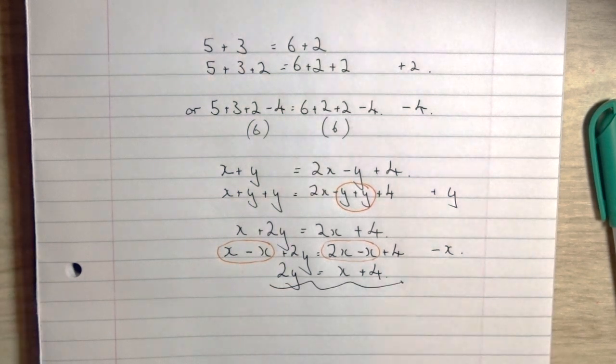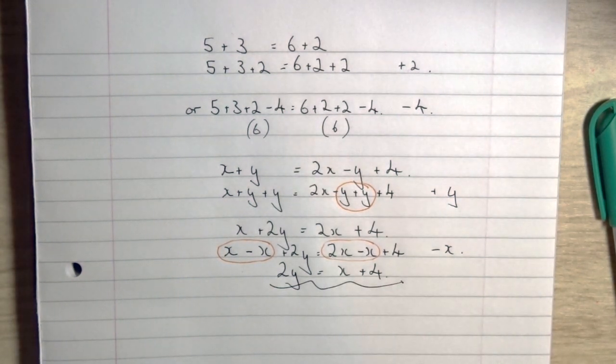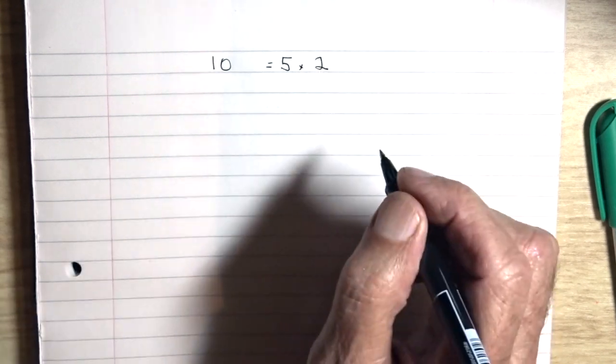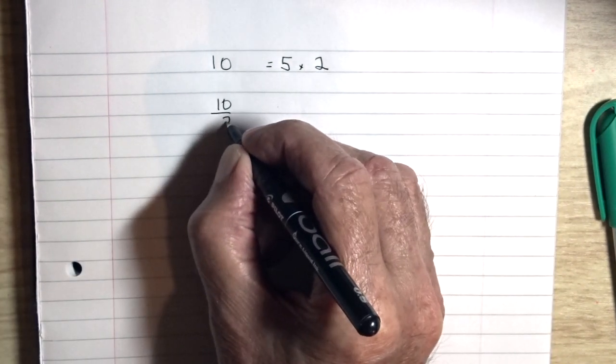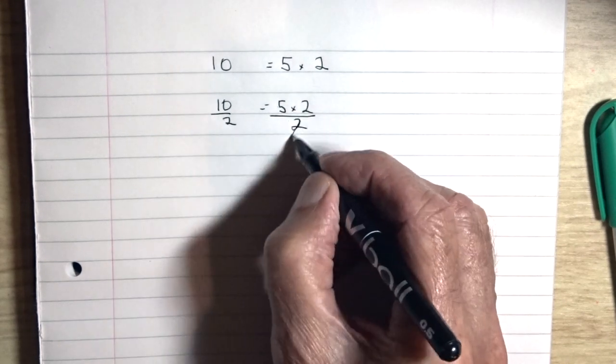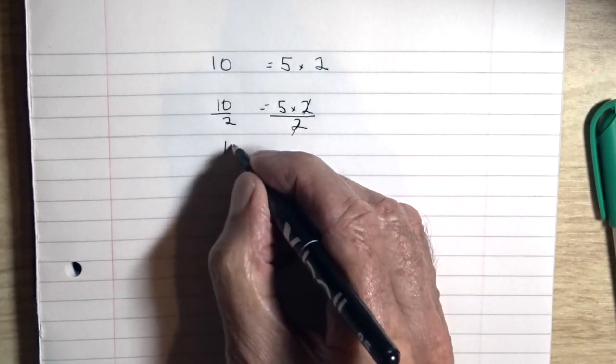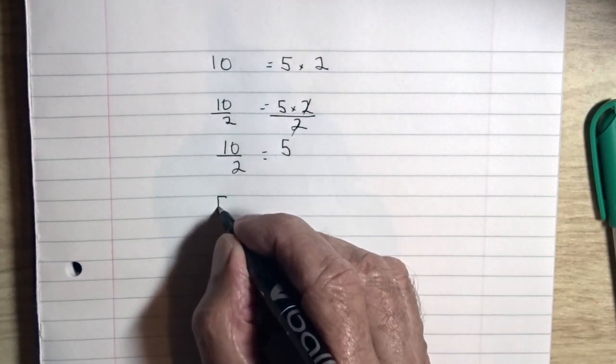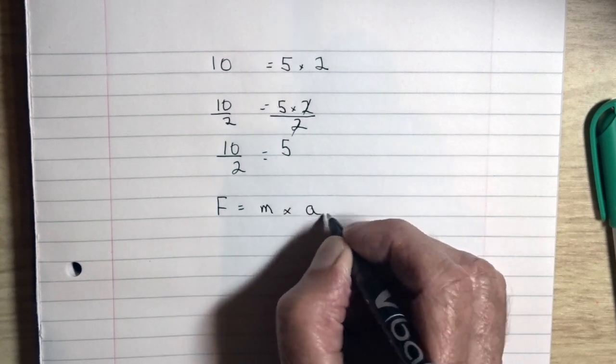The simple rule is always whatever you do on one side of the equation you do on the other. That applies to multiply and divide equations. Starting with an example of a simple number equation: 10 obviously equals 5 times 2. If we divide both sides by 2, then we have 10 divided by 2 equals 5. The 2s cancel out on the right hand side.